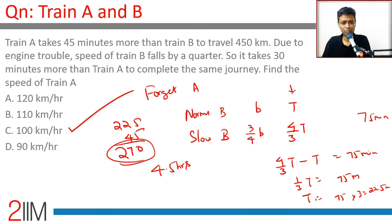Delightful question, especially if you do it by the juiciest method. A is compared to B, A is compared to slow B. Forget A, compare normal B and slow B. Speed falls by a quarter, that means time taken will increase. Speed goes to 3 by 4 b, time goes to 4 by 3 t. Once you have got this equation, the difference is 75, you get t, then you can rush to the answer.